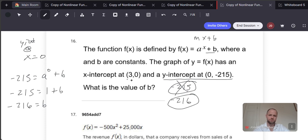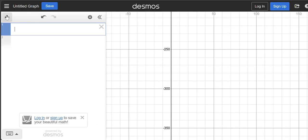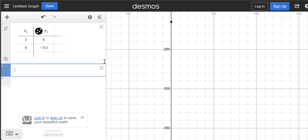So I want to show you the tools on Desmos that could have potentially led to that. So they give us two points here, 3,0 and 0, negative 215. And so we could go ahead and plug these into Desmos through the table. So this is going to be 3,0 and then 0, negative 215.